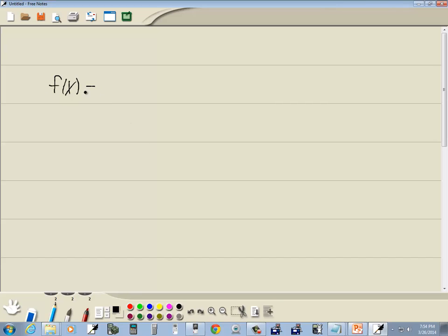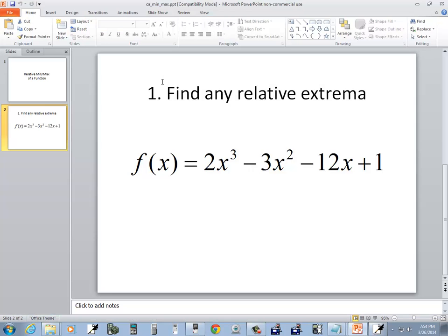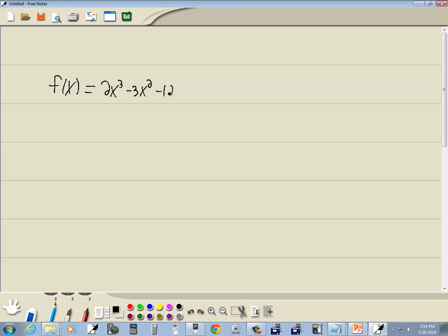We've got f of x is equal to 2x to the third minus 3x squared minus 12x plus 1.